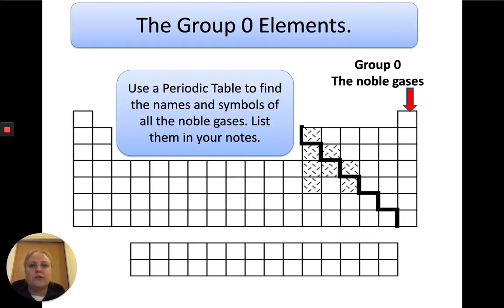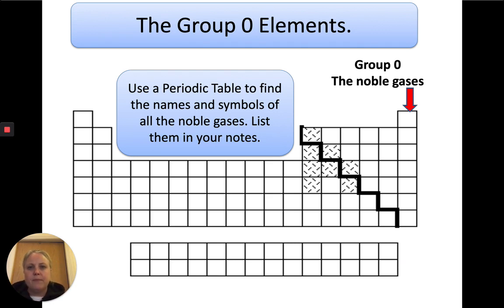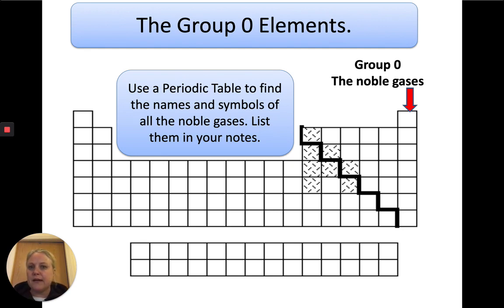So where are the group zero elements? You need a periodic table — you might have one in your planner or you can find one on the web. Where are the group zero elements? They're also known as the noble gases. Can you pause the video and find out the names of those noble gases?